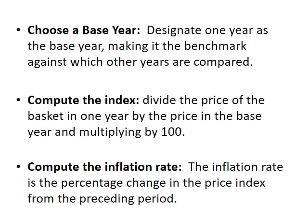You compute the index by dividing the price of the basket in one year by the price of the basket in the base year, then multiplying by 100. Note that the answer does not have a percentage sign — percentages belong to when someone asks you for a rate, but an index does not have a percentage added to it, even though you are multiplying by 100. The index for each year fluctuates around the base year of 100.